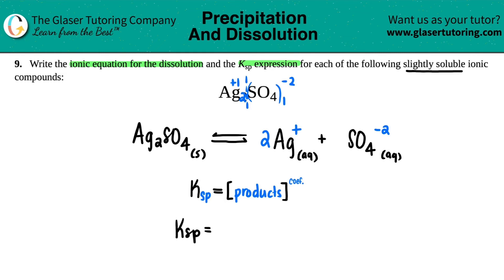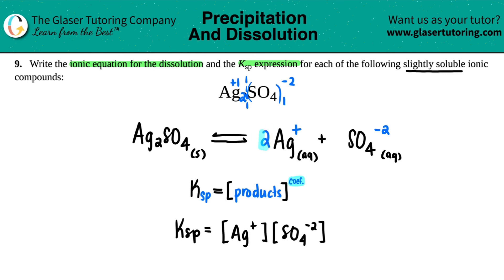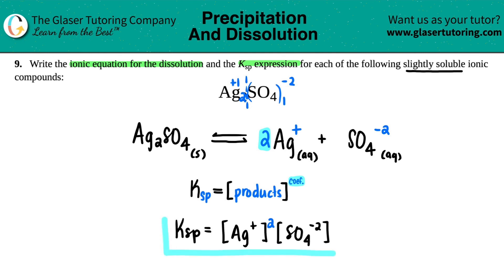Ksp equals — I have two products, so Ag⁺ multiplied by SO₄²⁻. Remember, in a Ksp or Ka/Kb expression, concentrations are multiplied. Now we have to pay attention to coefficients — we have to raise each term to its coefficient. When we did the acid-base chapter, everything was one-to-one, so it didn't matter. But for Ksp, you have to pay attention to those coefficients. There were two Ag's, so the Ag⁺ is raised to the second power. There was only one sulfate, so SO₄²⁻ is raised to the first — and anything raised to the first is itself. That is your final Ksp expression.